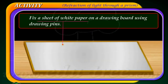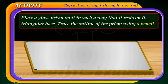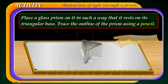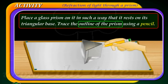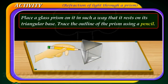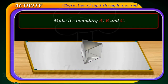First, fix a sheet of paper on a drawing board using drawing pins. Place a glass prism on it in such a way that it rests on its triangular base. Trace the outline of the prism using a pencil and mark its boundary as A, B, and C.